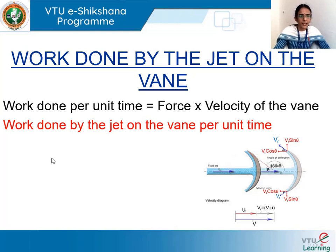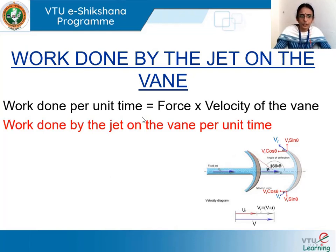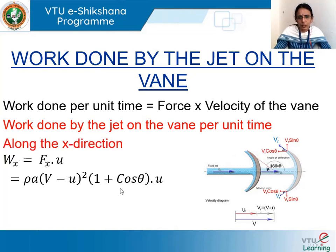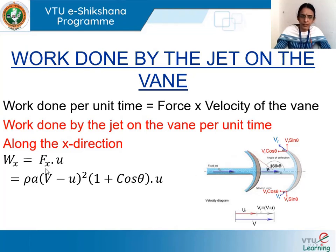This concept can be extended to find the work done by a jet impinging on a curved vane moving with velocity u. The work done per unit time, or power generated, can be calculated along x and y directions. Along the x direction, work done per unit time Wx equals the component of force along x, which is Fx, multiplied by the velocity of the vane u. We have Fx = ρA(v − u)²(1 + cosθ), so Wx = ρA(v − u)²(1 + cosθ) × u.